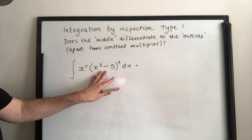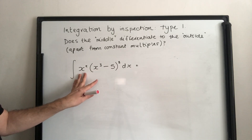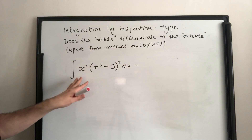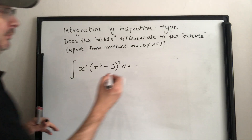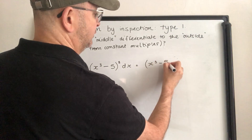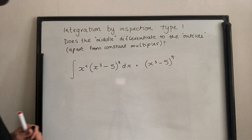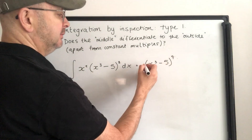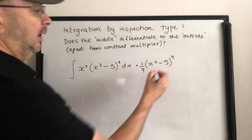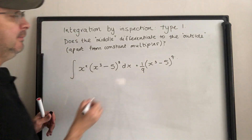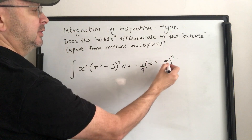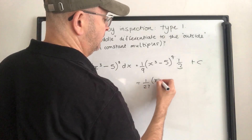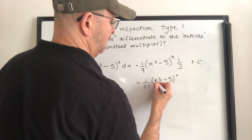On this one: does the middle, x cubed minus 5, differentiate to the outside, x squared? It differentiates to 3x squared — yes, the constant multiple is 3. That's fine, but I need the x squared there; if it wasn't there I'd have to use a different method. So x cubed minus 5 to the power of 8 would come from a power of 9. The 9 comes down the front; we don't want it, so we multiply by a ninth. Then x cubed minus 5 differentiates to 3x squared, so we put a third there and add c. Final answer: 1 over 27 times x cubed minus 5 to the power of 9, plus c.